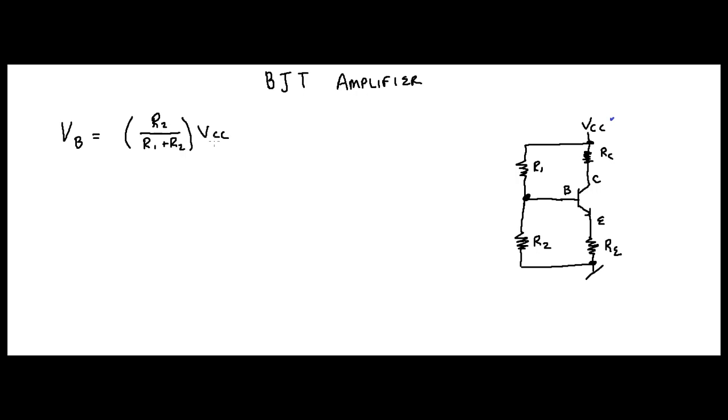Now once you know this voltage, we want to find VE, which is right here. Well, what do we know? We know VBE for silicon anyway equals 0.7 volts. So VE, that's going to equal VB minus 0.7 volts. And remember, this is VBE. I'm doing this for a silicon diode or a silicon transistor.